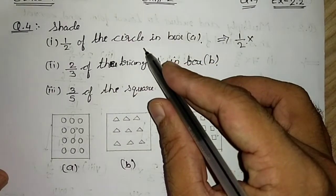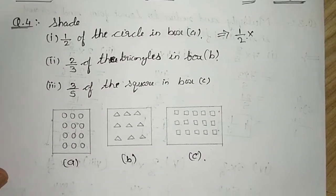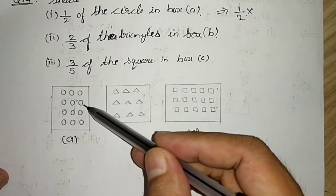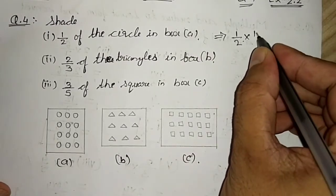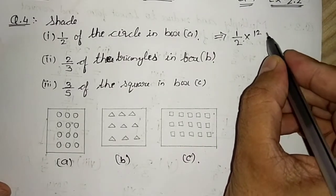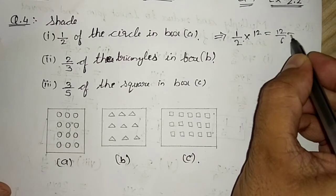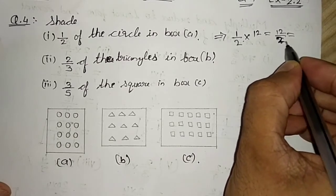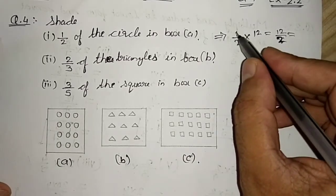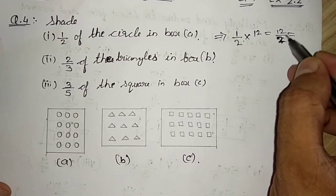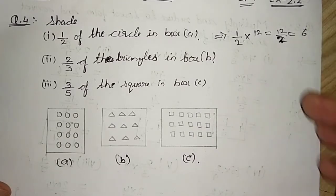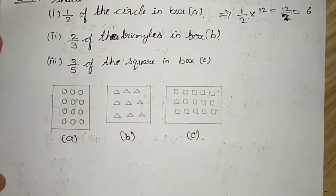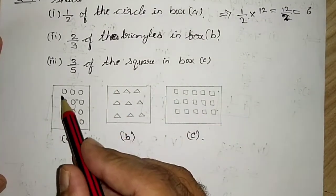Count the circles in the box A: 3, 6, 9, 12. So you have to shade half of the 12 and half of the 12 is 12 by 2. 12 ones are 12 divided by 2, 2 ones are 12, 6. So you have to shade six circles. So we will start shading.